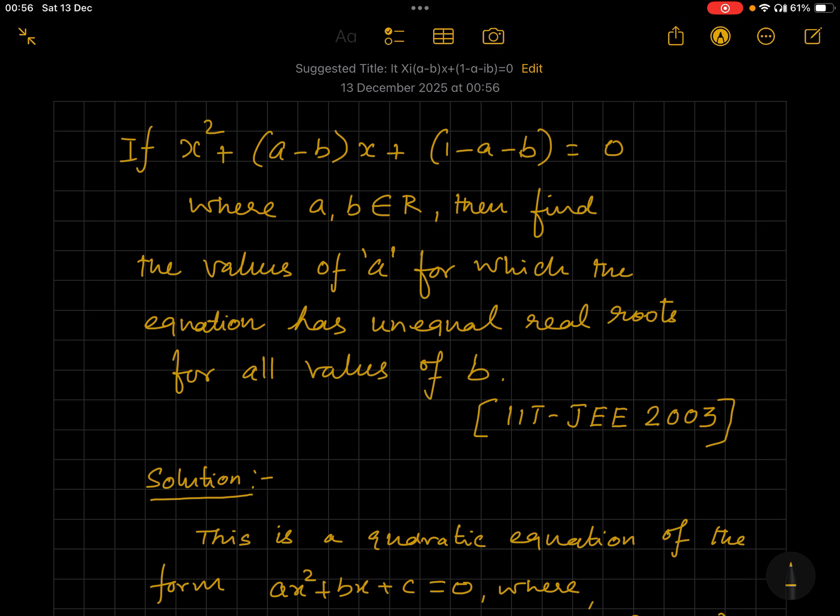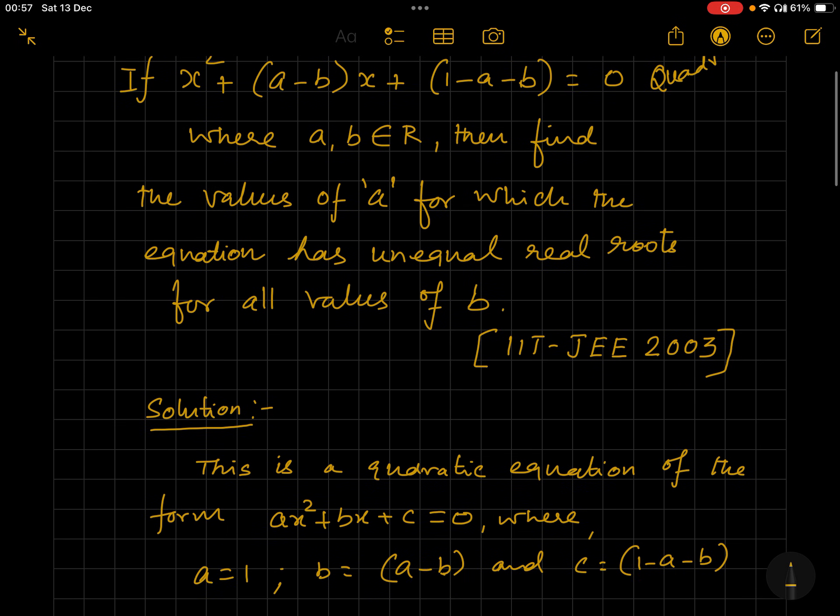wonderfully constructed question. Let's see the question: If x² + (a - b)x + (4 - a - b) = 0, where a, b ∈ R, then find the values of 'a' for which the equation has unequal real roots for